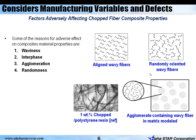Also in the material model, we can introduce manufacturing variables and defects — for example, waviness, interface, agglomeration, and randomness. These are the different manufacturing variables and defects that can be introduced in the material model using MCQ Chopped.